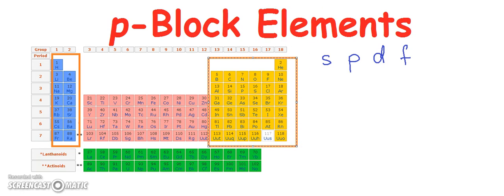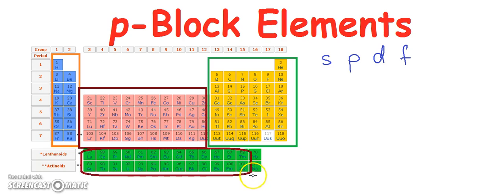Then the elements present here in the pink colors, these are the D block elements and here we have the lanthanoids and the actinoids, these are the F block elements.